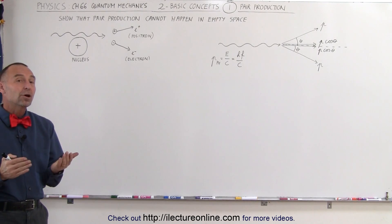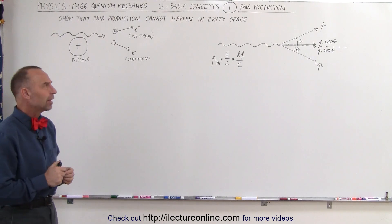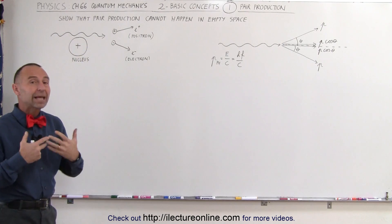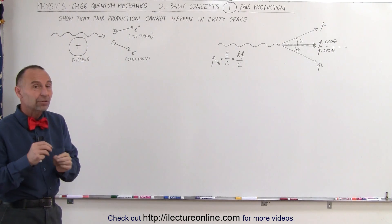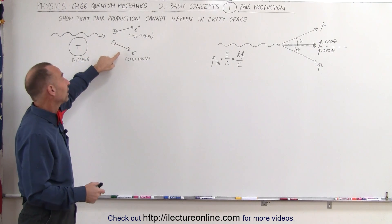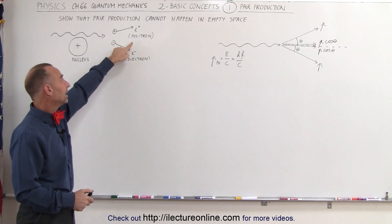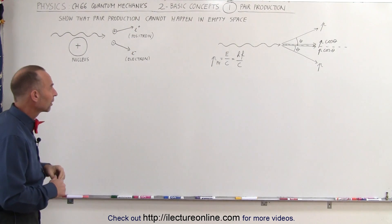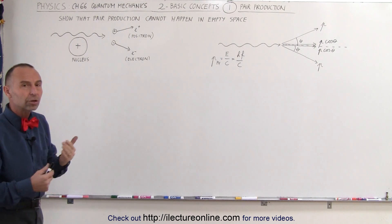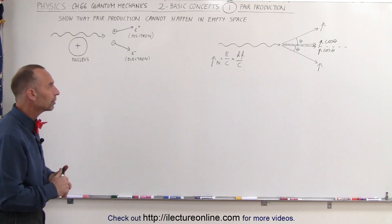Welcome to ElectronLine. In this video, we're going to show you why you cannot have pair production in empty space. In other words, when a photon comes along with sufficient energy, it cannot spontaneously on its own, without any other interference or interaction, turn itself into a particle and an antiparticle — an electron and a positron. Something must happen; there must be some effect from some other nearby nucleus in order for the photon to turn itself into a pair of particles.